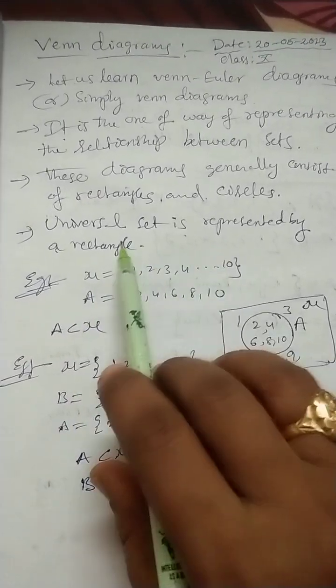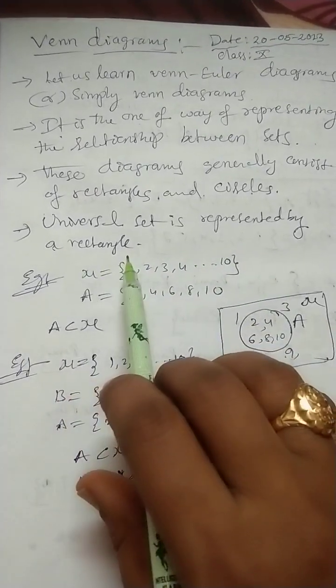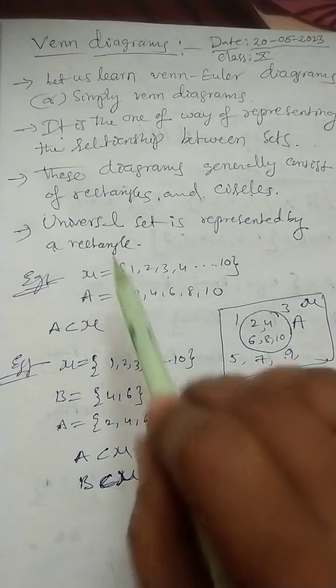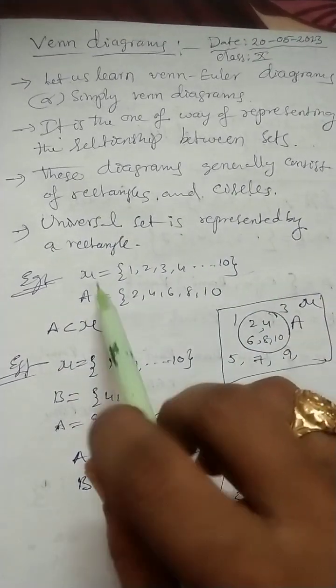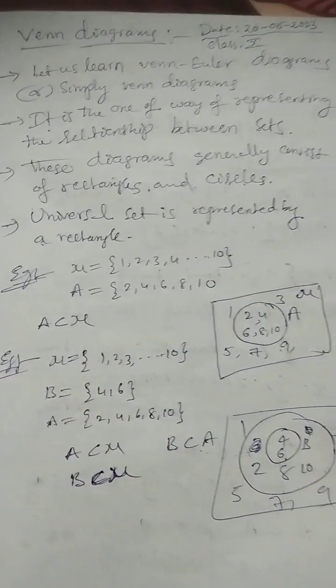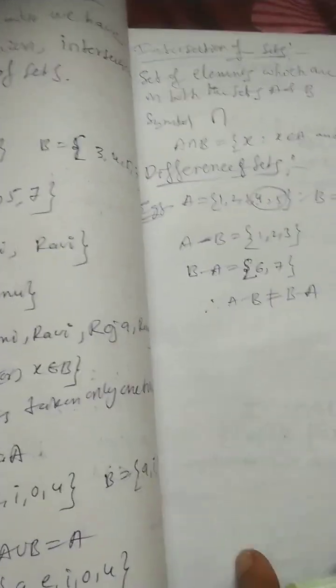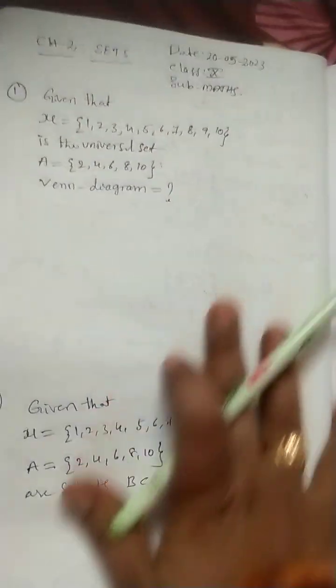It is one way of representing the relationship between sets. These diagrams generally consist of rectangles and circles. Universal set is represented by rectangle. That is Mu, the universal set.